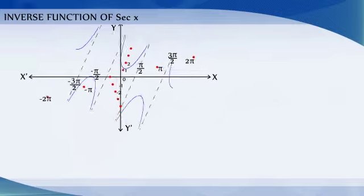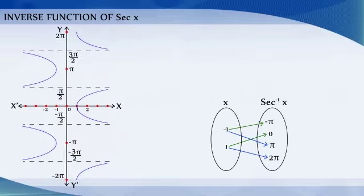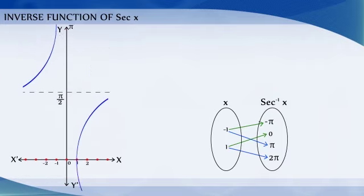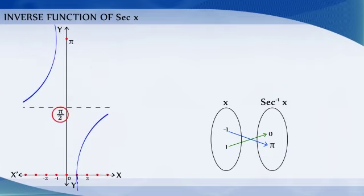Corresponding to each of these intervals, we get different branches of the function Secant Inverse. The branch with range [0, pi] minus {pi/2} is called the principal value branch of the function Secant Inverse.